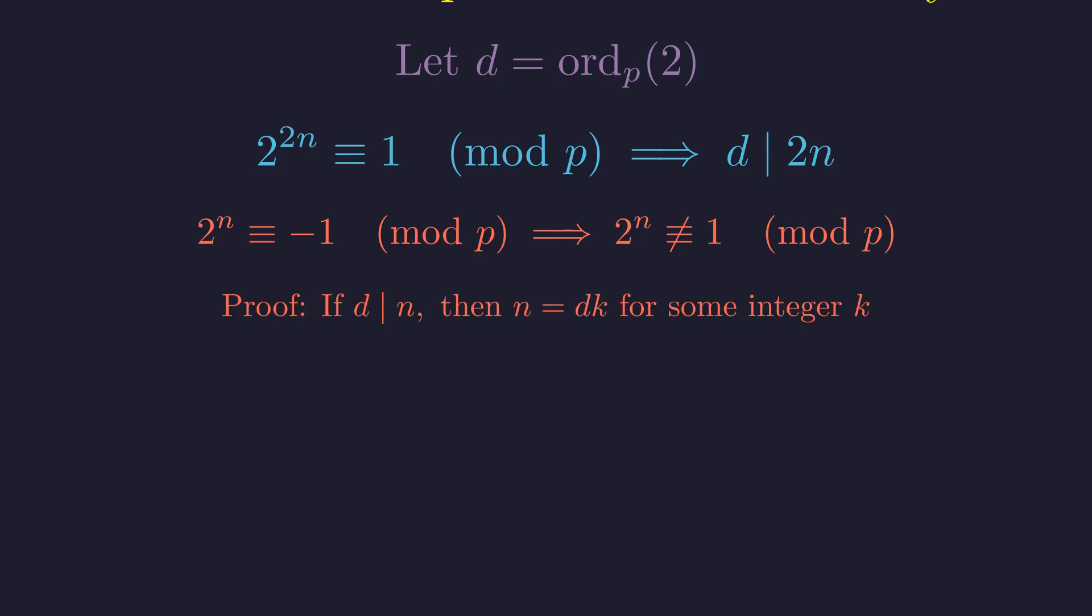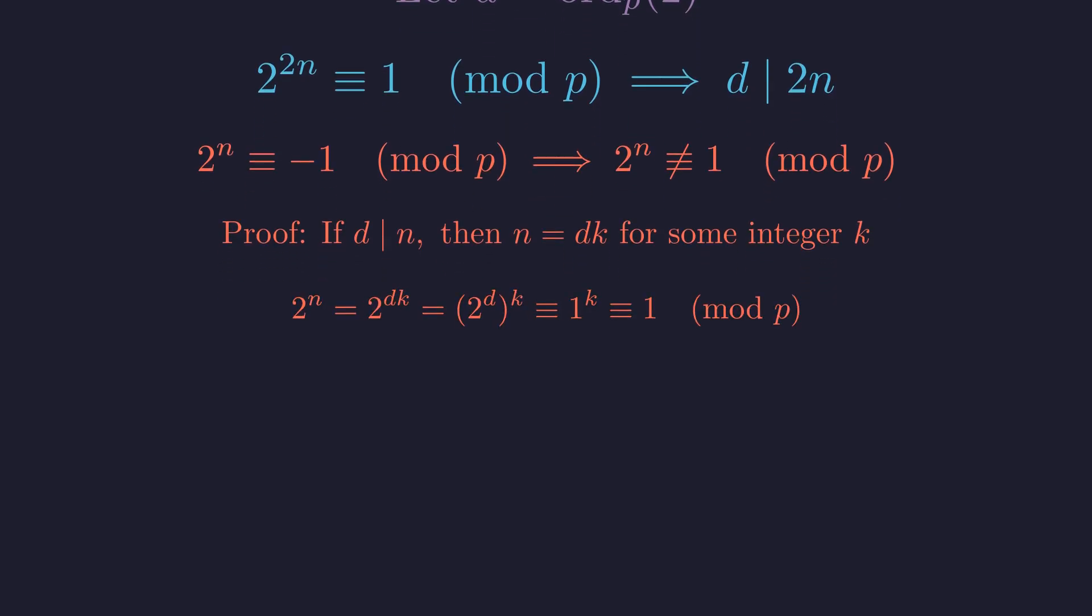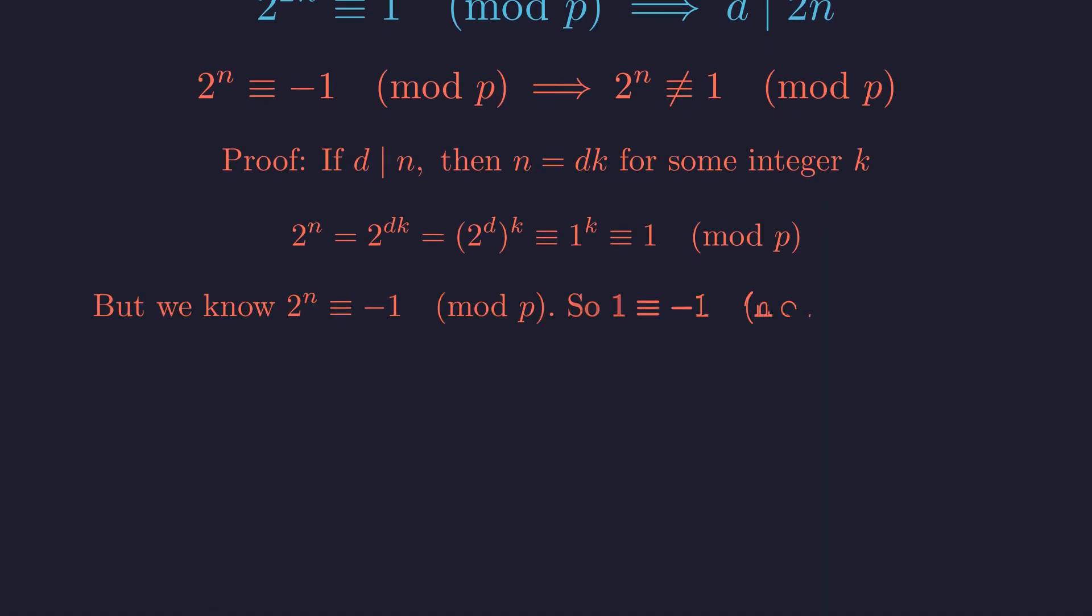Let's prove this rigorously. If d were to divide n, then n would be some multiple of d. Then 2 to the n would be 2 to the dk, which equals 2 to the d raised to the k power. Since 2 to the d is congruent to 1, this would be congruent to 1 modulo p. This would mean 1 is congruent to negative 1, which implies p divides 2. But p must be an odd prime. This contradiction proves d cannot divide n.